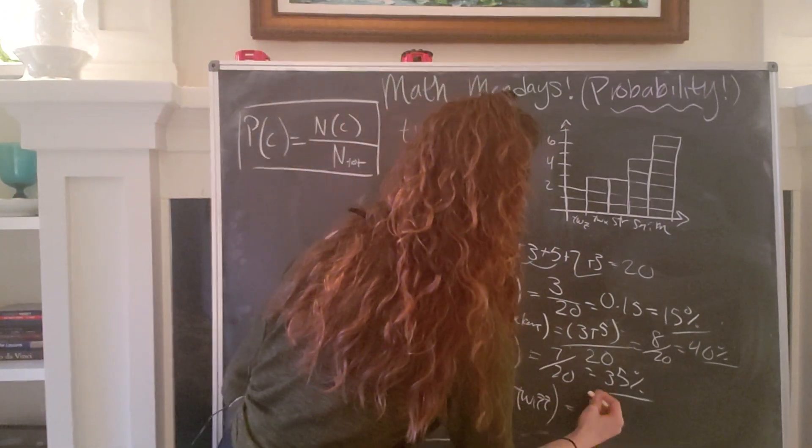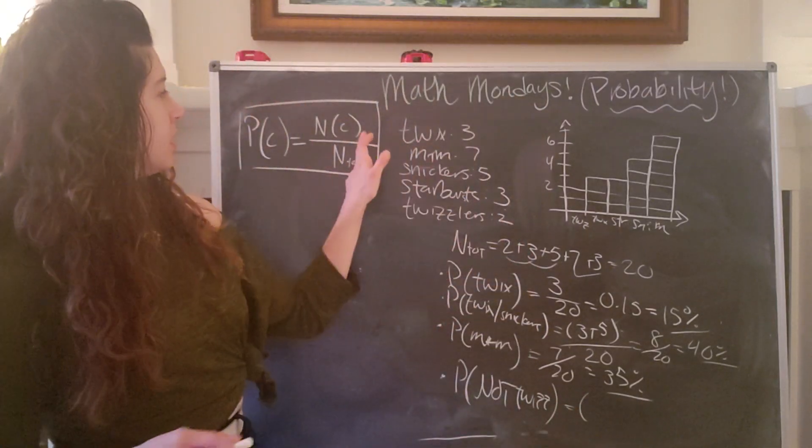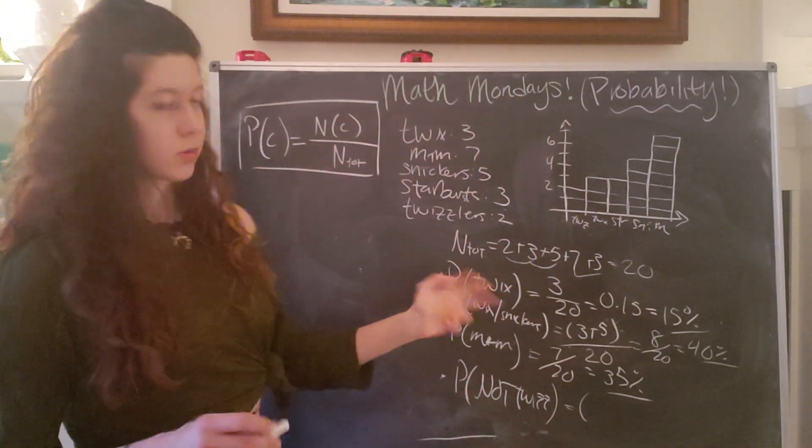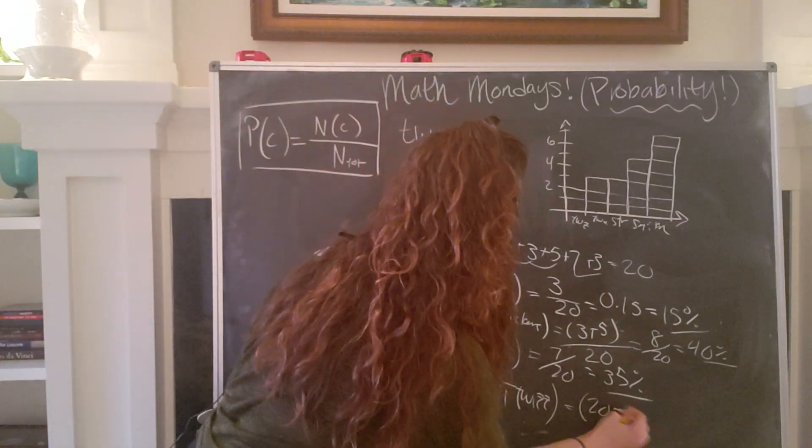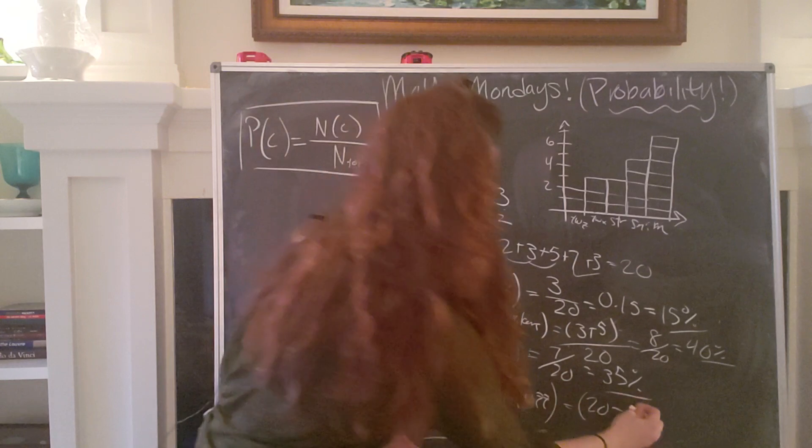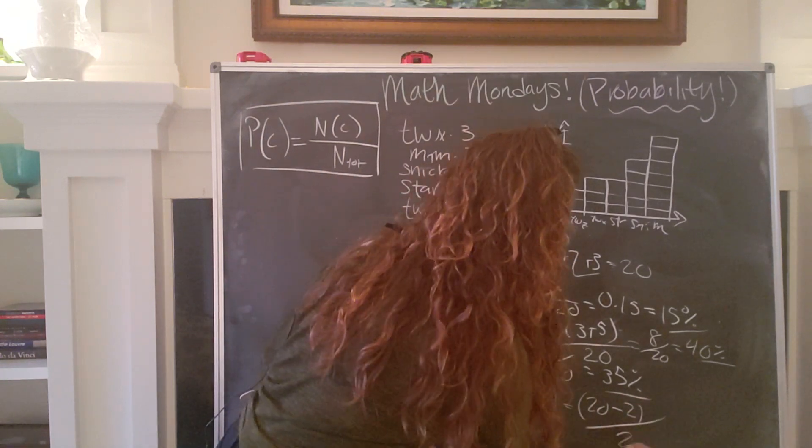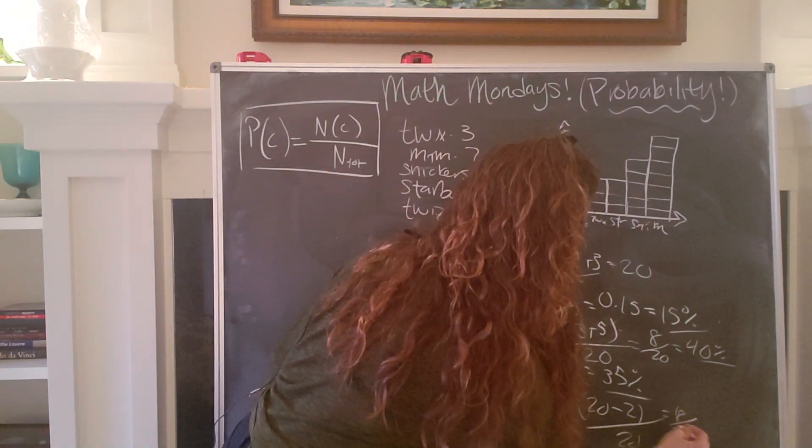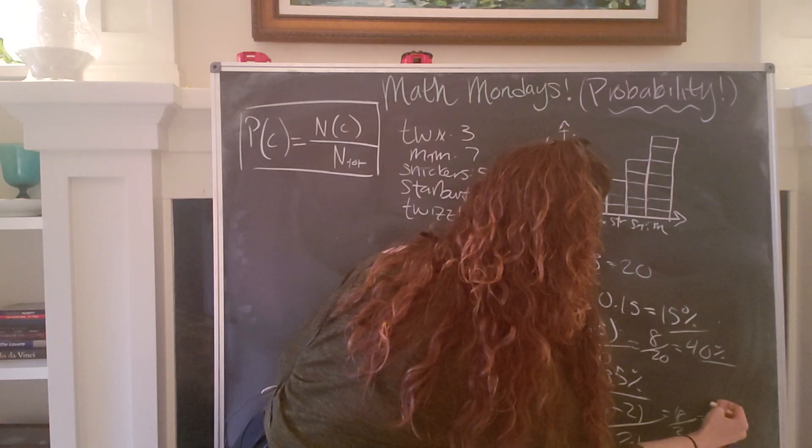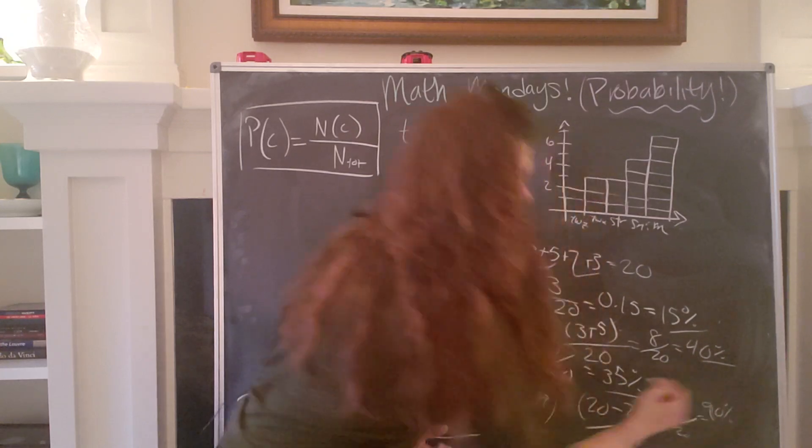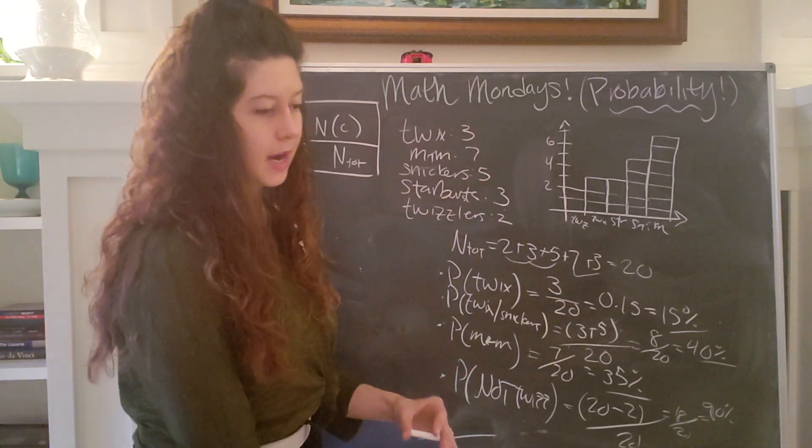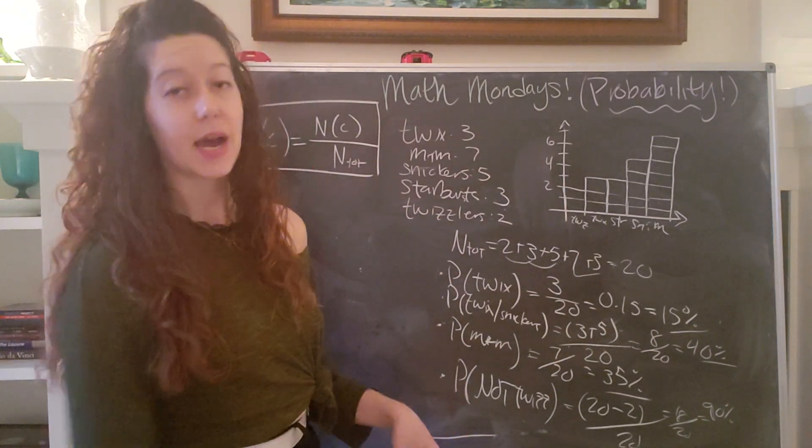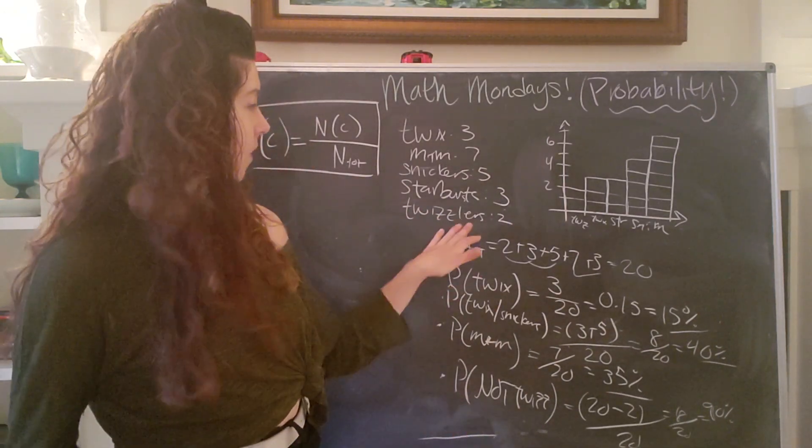So what I would do is I would say, okay, well, the number of not Twizzlers is just the total number of pieces of candy, 20 minus the total number of Twizzlers. So that would be 20 minus two divided by the total, which is 18 over 20, which is 90%. So 90% of the time, or if I were to reach in the bag nine or 10 times, nine out of those 10 times, I would not get Twizzlers.